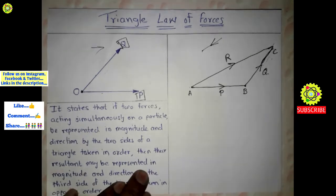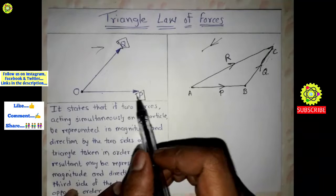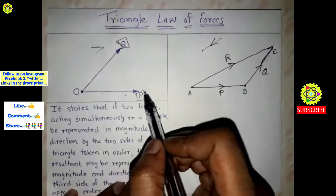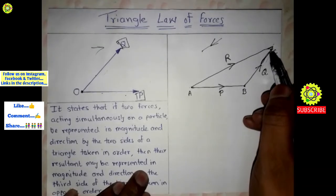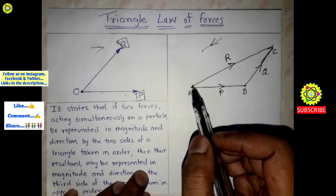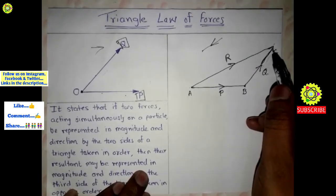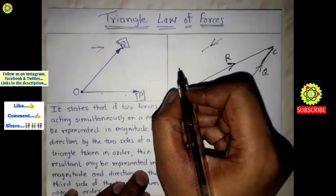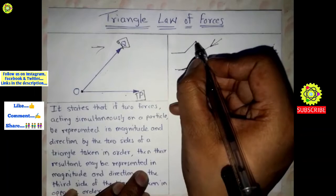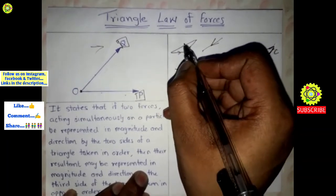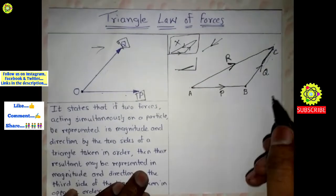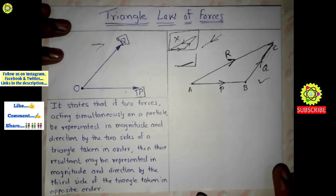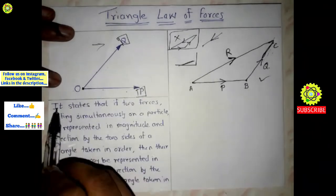The order of the resultant will be in the opposite direction. We drew force P, then force Q parallel to it, taken in the same order because they are in the same direction. If we go in the same order again it will not form a resultant, so we reverse the order to get the resultant — the resultant is in the opposite order.